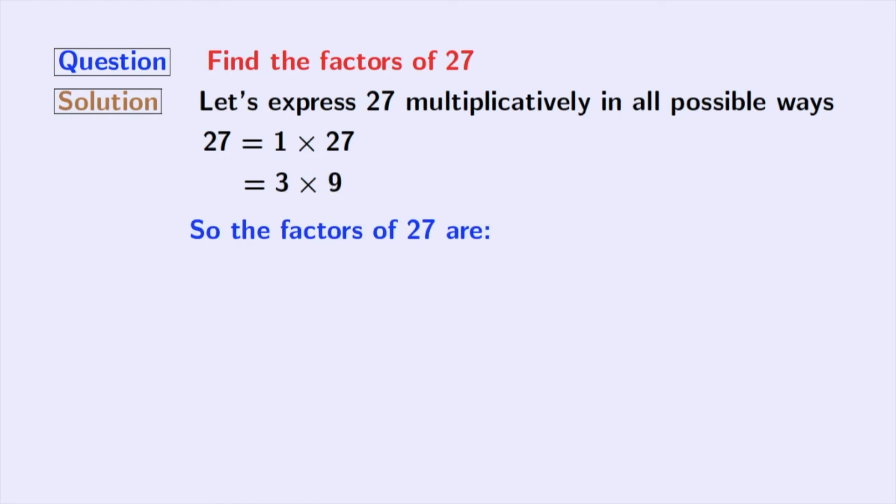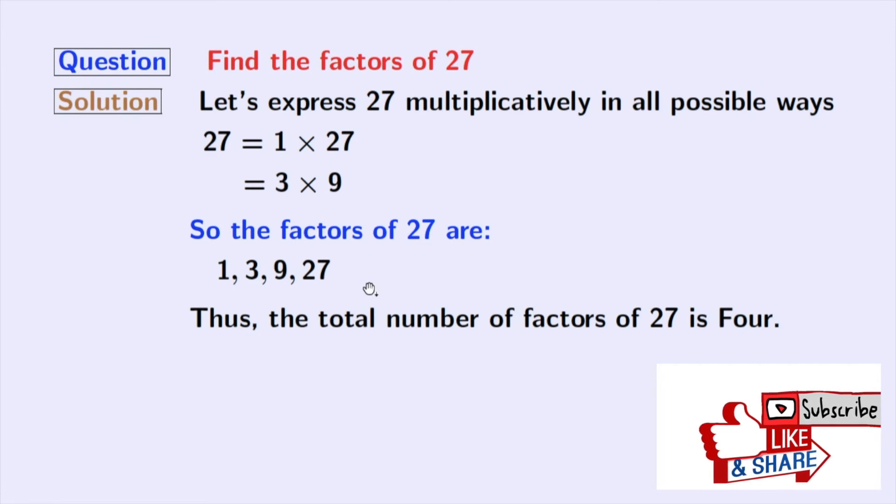Now we have obtained all the factors of 27, which are 1, 3, 9, and 27. So the total number of factors of 27 is 4.